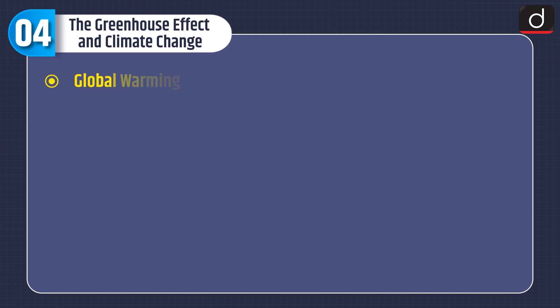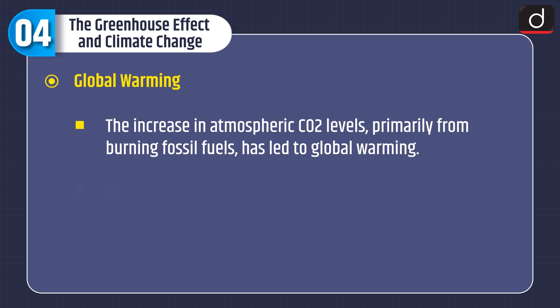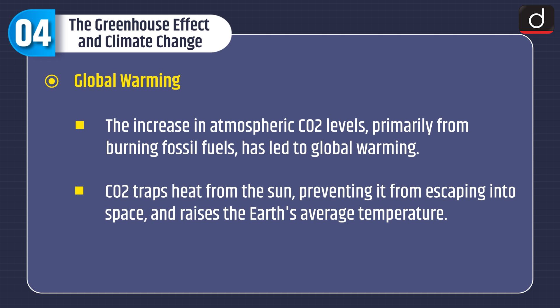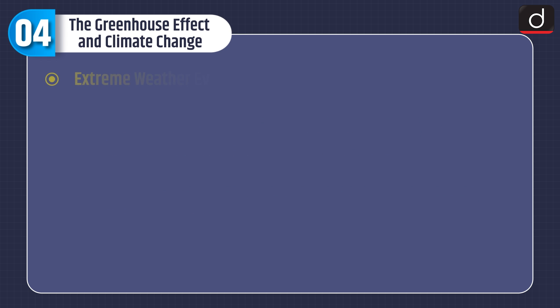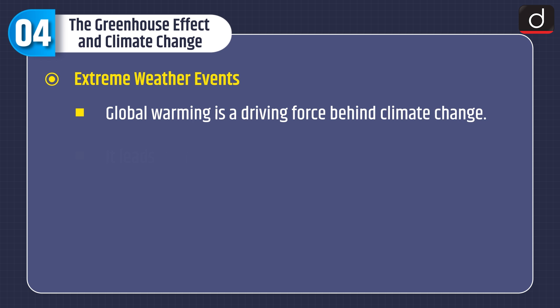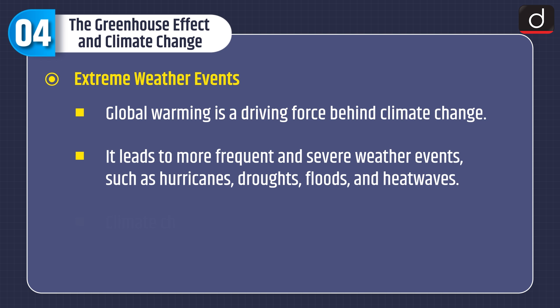Now let us discuss the greenhouse effect and climate change. First, global warming: the increase in atmospheric carbon dioxide levels, primarily from burning fossil fuels, has led to global warming. Carbon dioxide traps heat from the Sun, preventing it from escaping into space and raising the Earth's average temperature. Second, extreme weather events: global warming is a driving force behind climate change, leading to more frequent and severe weather events such as hurricanes, droughts, floods, and heat waves.